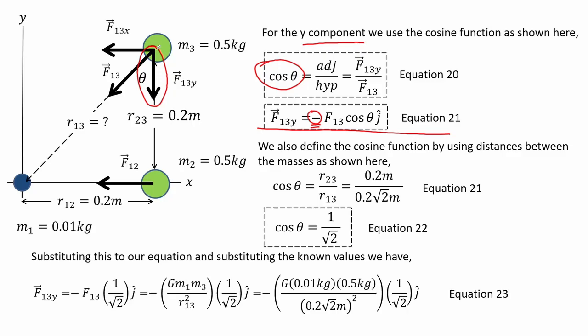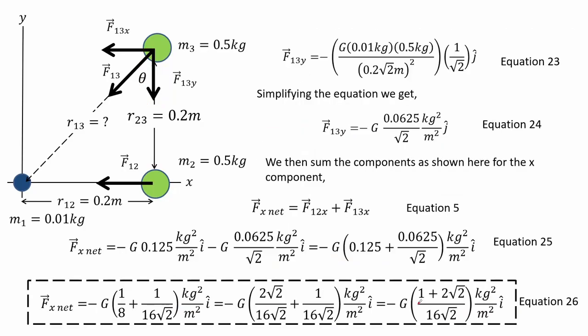We now have an expression for cosine theta, which is equation 22. We then substitute this into our equation along with the known values, as shown in equation 23. Further simplifying the equation we get an expression for the y-component as shown in equation 24.